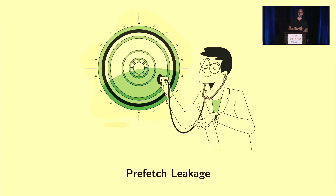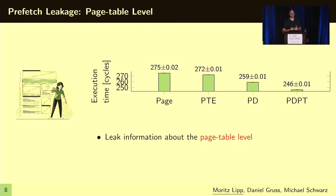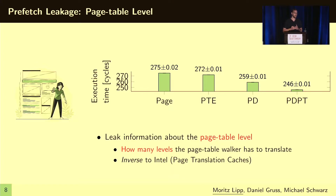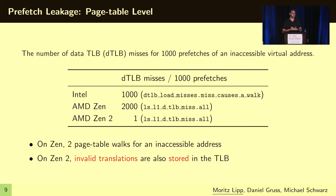So what is actually leaking from the prefetch instruction? On the one hand, you can leak information about the page table level of a certain address — observing how many levels the page table walker has to traverse to find the corresponding physical address. Interestingly, the observation is the inverse compared to Intel CPUs, because Intel uses page translation caches that speed up the translation process. On Zen CPUs, you have two page table walks to inaccessible addresses such as kernel addresses, but on Zen 2 and newer microarchitectures, even invalid translations are stored in the TLB — which does not happen on Intel.